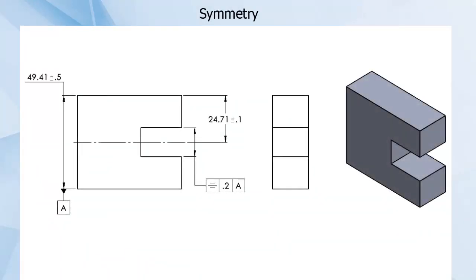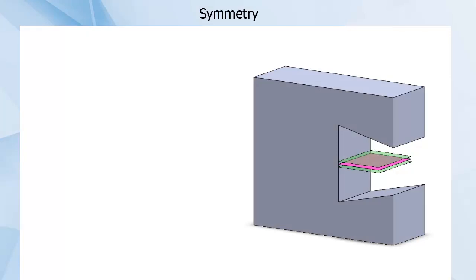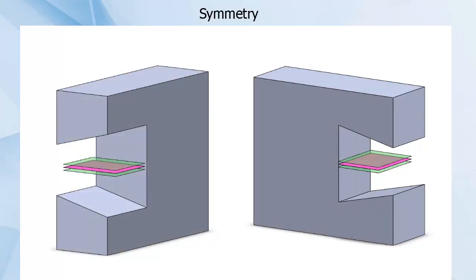Symmetry, which controls only median points, allows for typically undesired results. For instance, a slot controlled only for symmetry allows for variations along both horizontal axes. The part could pass inspection with an angled cut along its depth, or an angled cut along its width, as long as the top and bottom were symmetrically angled.